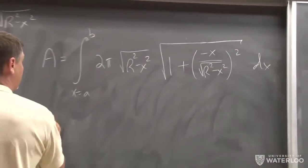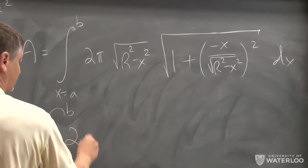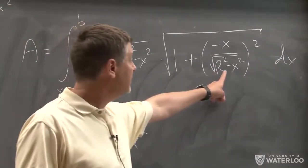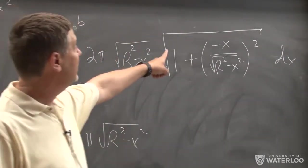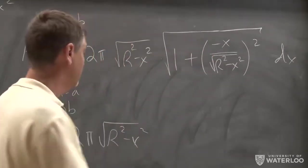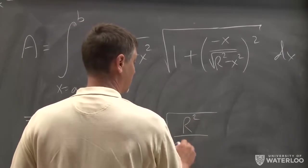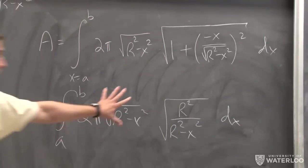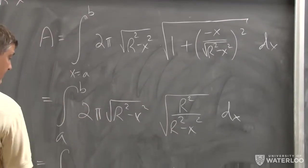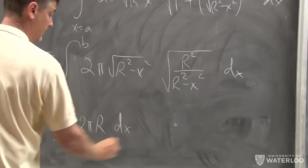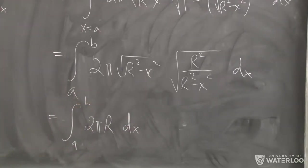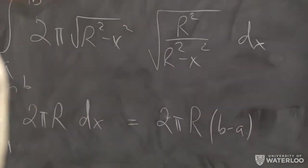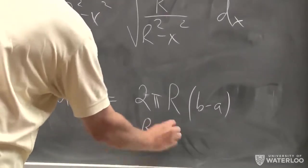We can simplify that. There's an R² − x² term; simplifying gives R² − x² + x², which simplifies to R²/(R² − x²). The square root of R² − x² then cancels, leaving the integral of 2πR dx from a to b, giving the very simple final answer 2πR(b − a), or 2πR·Δx.